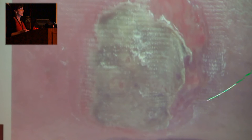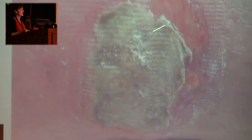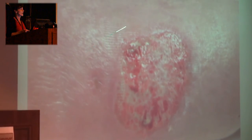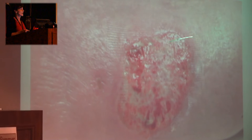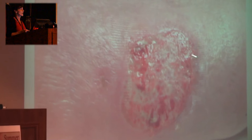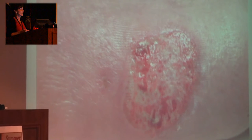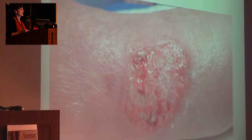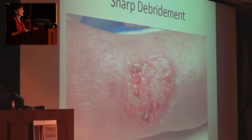Another example showing slough — such a fun word — we have a thick, slimy, adherent layer. Using basic sharp techniques we've got that off. You can see that even though we've got the top layer off, there's still some residual fibrinous, non-viable yellow tissue in that wound. So we're still going to continue employing different debridement techniques to get that wound working.